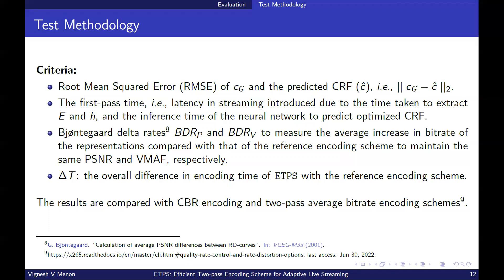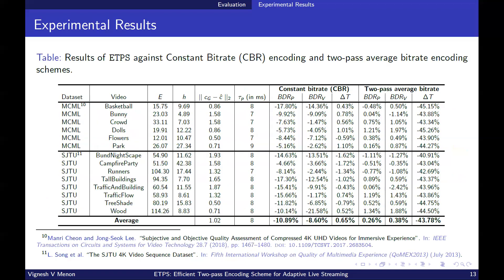Bjontegaard delta rate refers to the average increase in the bitrate of representations compared with that of the reference encoding scheme to maintain the same PSNR and VMAF. Delta T represents the overall difference in encoding time of ETPS with the reference encoding scheme. This table summarizes the results of various test sequences using ETPS. The average L2 norm of the ground truth CRF with the predicted CRF is observed as 1.02. The prediction error ranges from 0.5 to 1.93, acceptable in live streaming applications. The average latency introduced to predict the optimized CRF for each segment is the time corresponding to the first GOP of the segment. Since the feature computation of the incoming video frames is carried out at the speed of 370 frames per second as a parallel process, it does not delay in streaming.